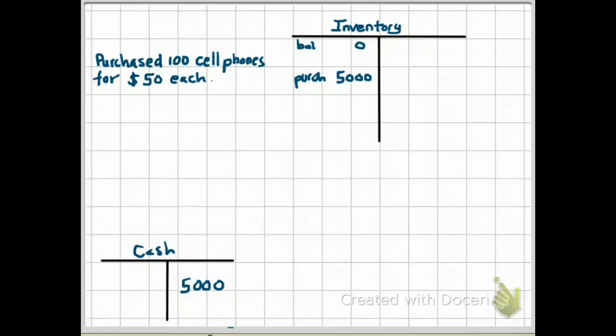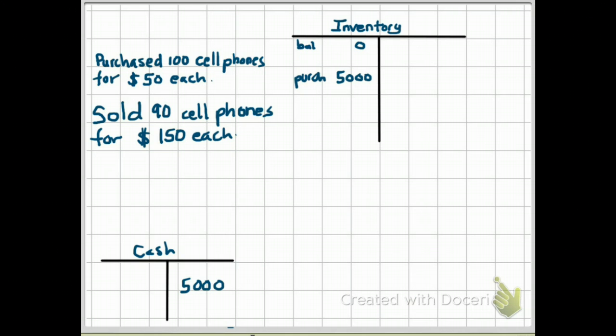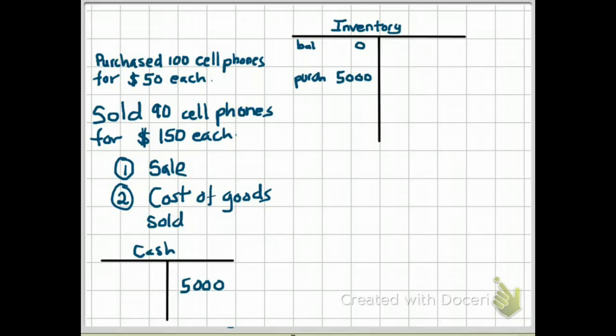Next, let's say that we sold 90 of those 100 cell phones we had in our inventory and our selling price for each cell phone was $150 each. Now we have to record journal entries for this transaction. Whenever we sell an inventory item, there are two transactions that occur simultaneously. And we need to record both those transactions. The first transaction relates to the sale of the phones. The second transaction relates to losing the inventory item. We gave away the inventory item, so we need to record that as well, which is the cost of goods sold.